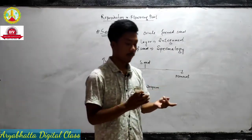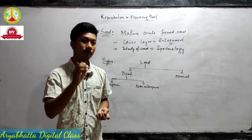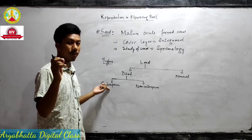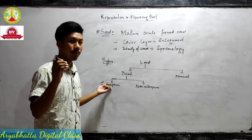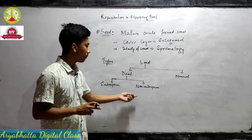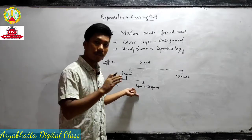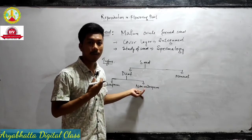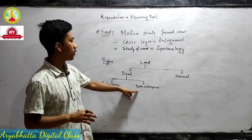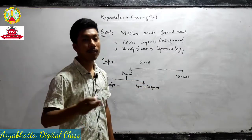What is an endospermic dicot seed? After the formation of embryo, if endosperm is still there inside the embryo sac — endosperm is the nutritive tissue which gives nutrition to the developing embryo — then we call it an endospermic dicot seed. If after the formation of embryo all the endosperm is utilized and there is no endosperm at all, then we call it a non-endospermic dicot seed.